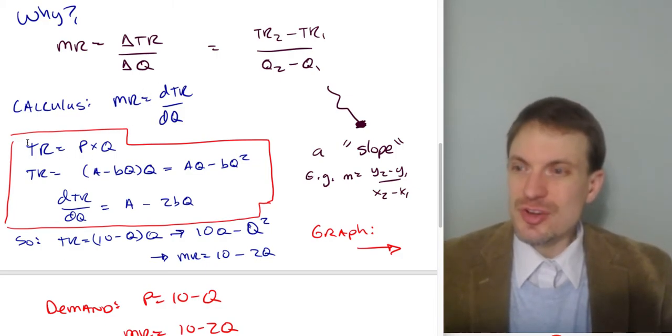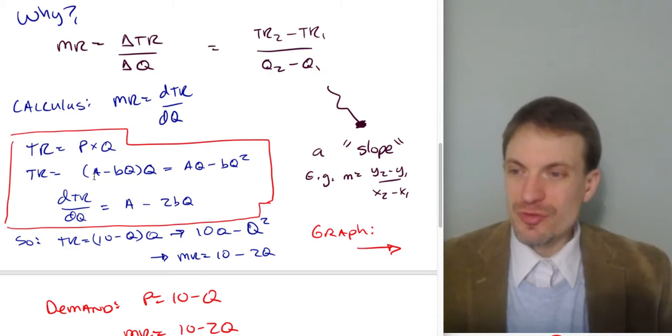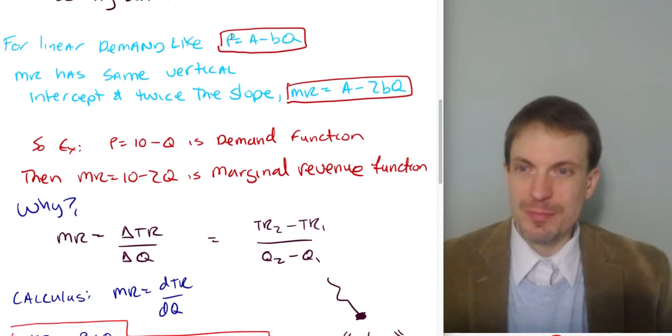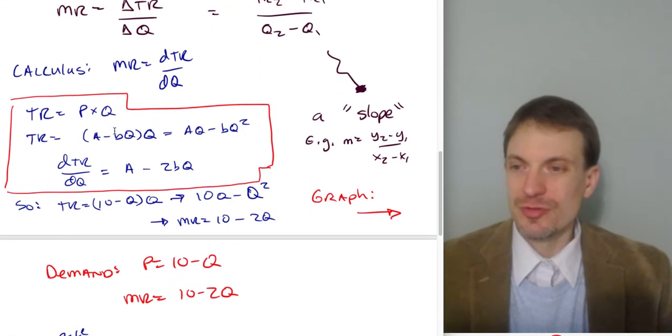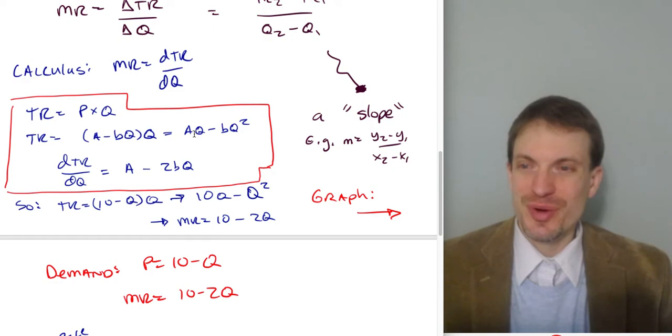Okay, so let's see this. Here's total revenue. That's just price times quantity. I had a representation for price that was A minus BQ. Why? Because I said price is equal to A minus BQ. That's just my demand curve. Times Q. I'll distribute my Q. And I'll get AQ minus BQ squared. Take my derivative. This will be A minus 2BQ.